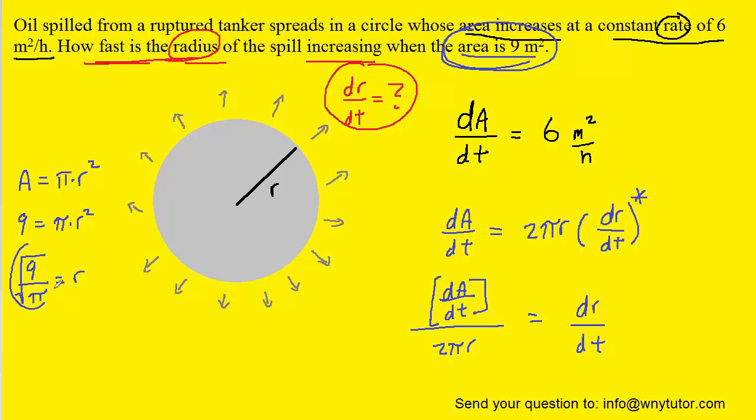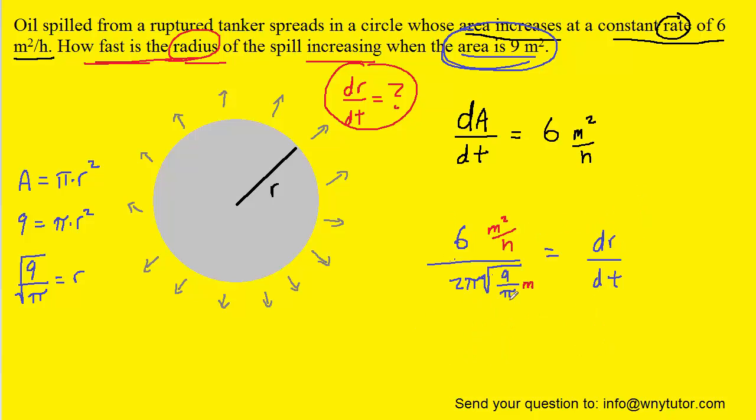We can take that radius and plug it into the equation we had developed for dr/dt. And then we can also plug the 6 in for dA/dt. Now, we've indicated in red the units of the quantities. We can see that we have meters squared in the numerator and then meters in the denominator. That was the unit of the radius. We can cancel a factor of meter in the denominator as well as the numerator, so the unit that remains standing is meters per hour.